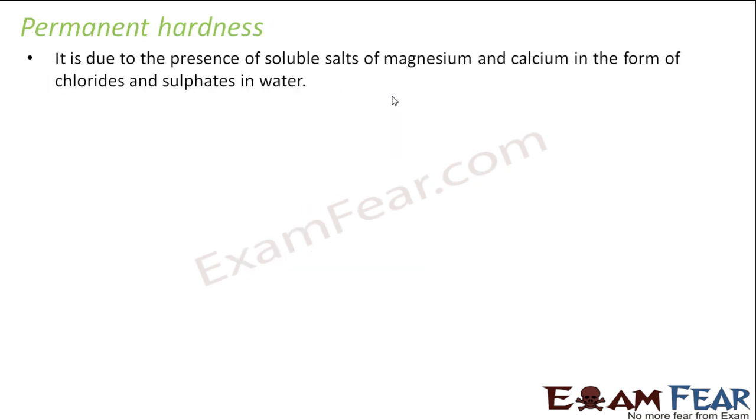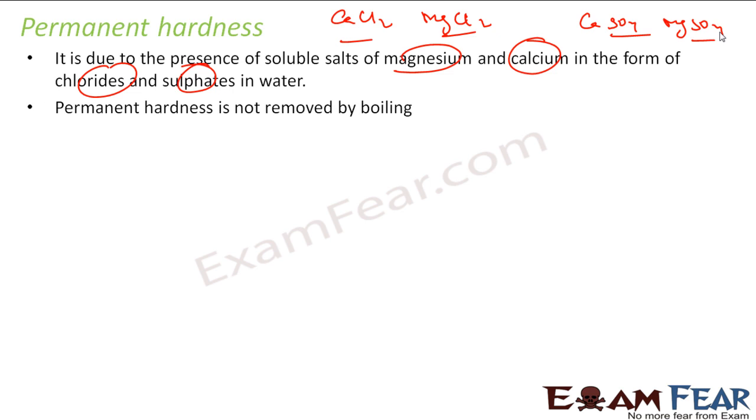Now there is permanent hardness. As I told, permanent hardness is because of the magnesium and calcium salts of chlorides and sulfates. So it is CaCl2 or MgCl2, chlorides or sulfates: CaSO4 or MgSO4. These four are generally the cause of permanent hardness in water. We cannot remove this by boiling. If we just boil it, nothing will happen. It will not remove the permanent hardness.